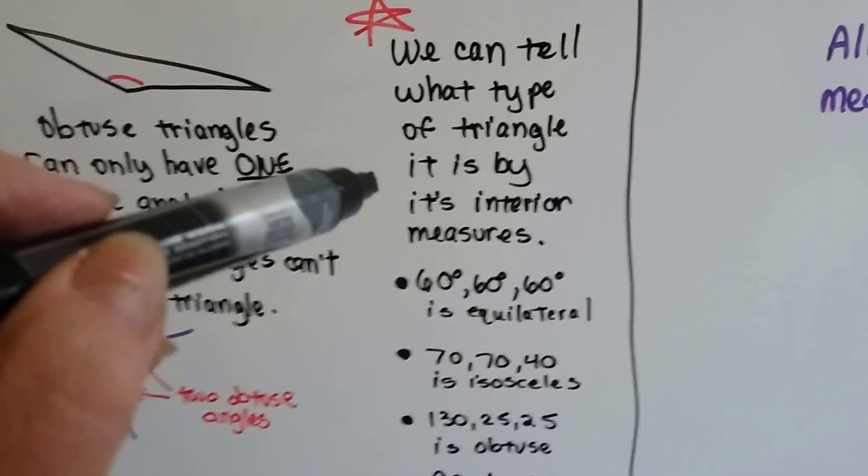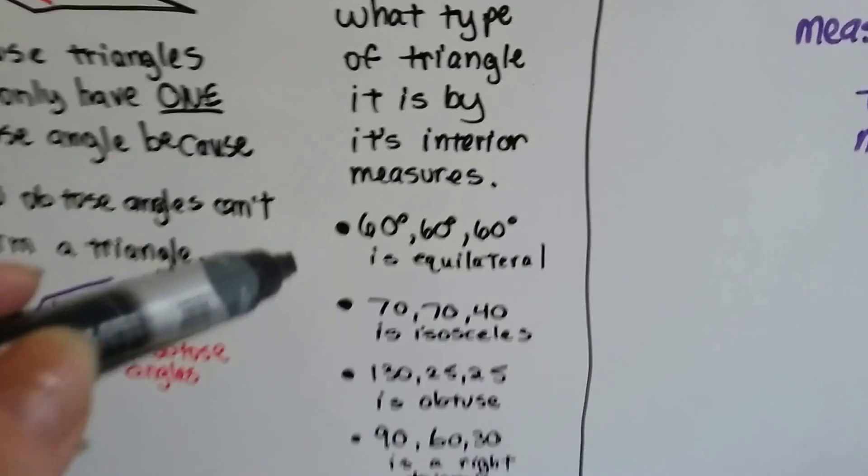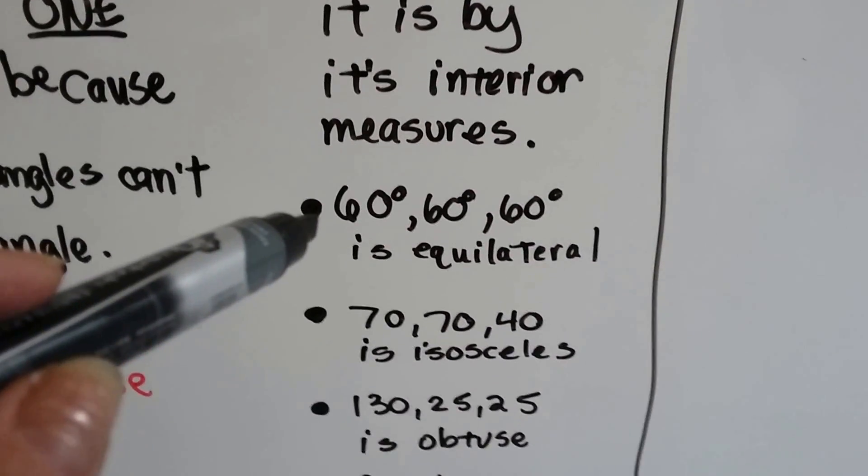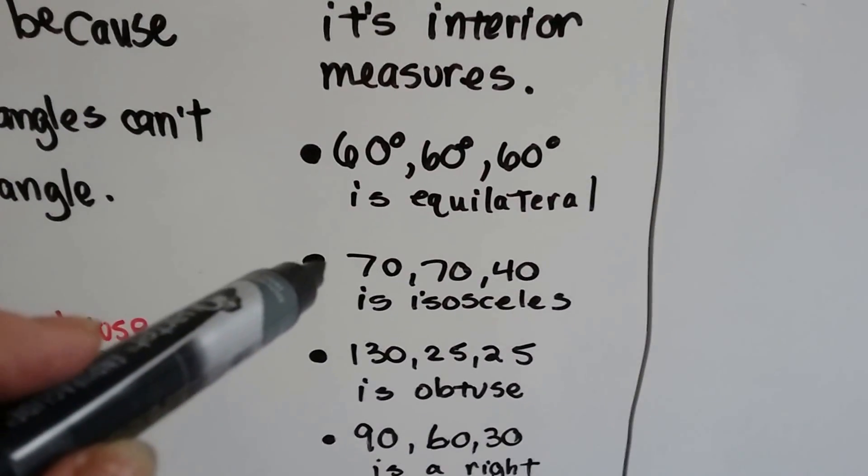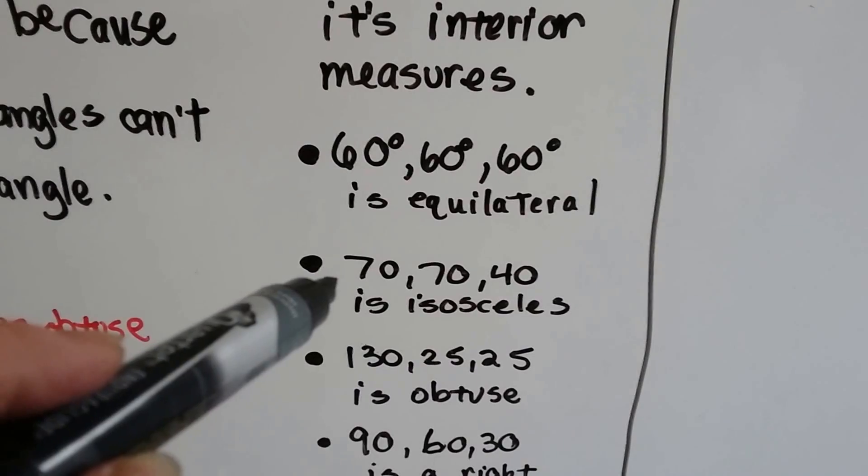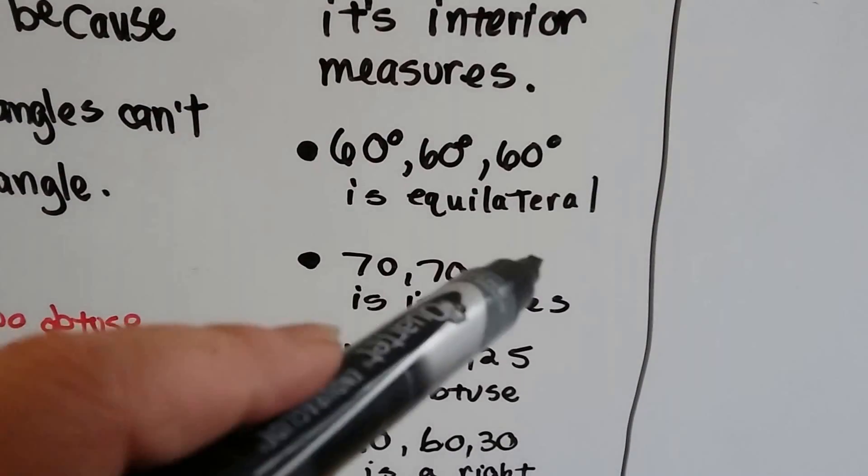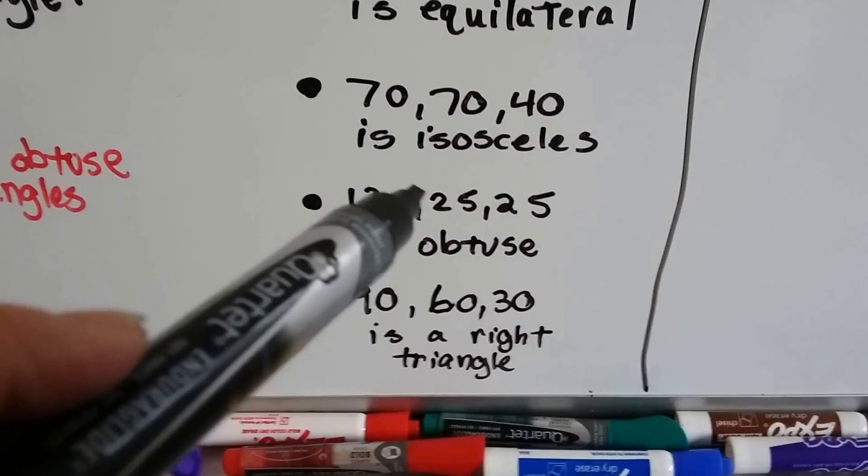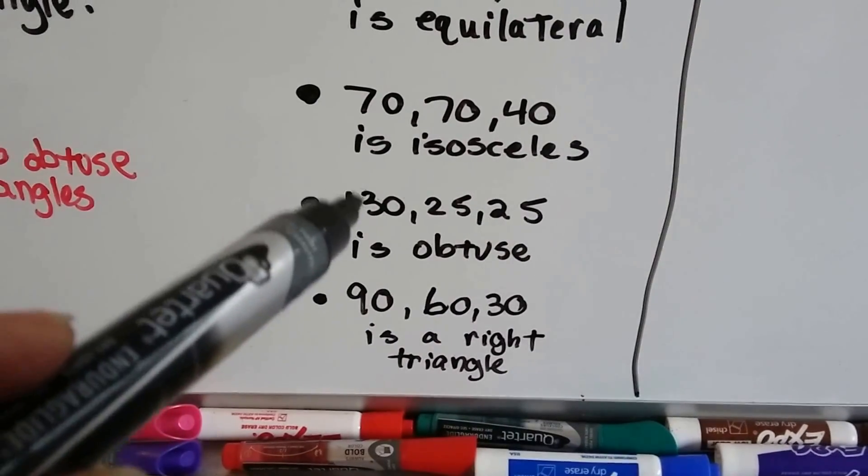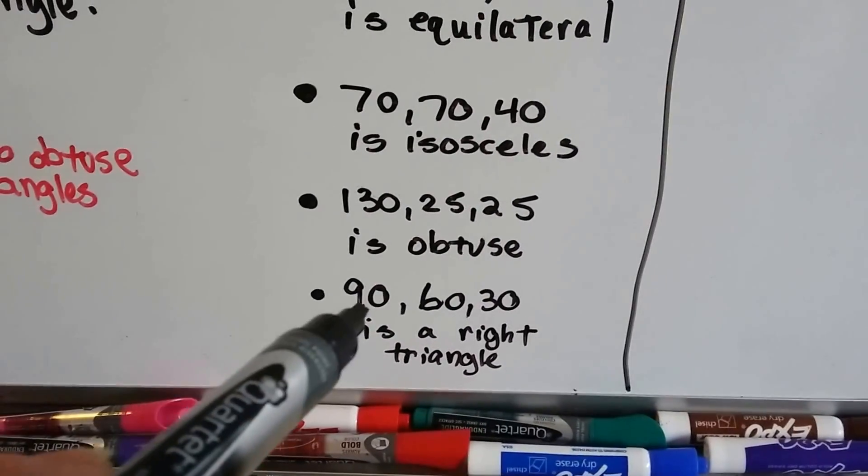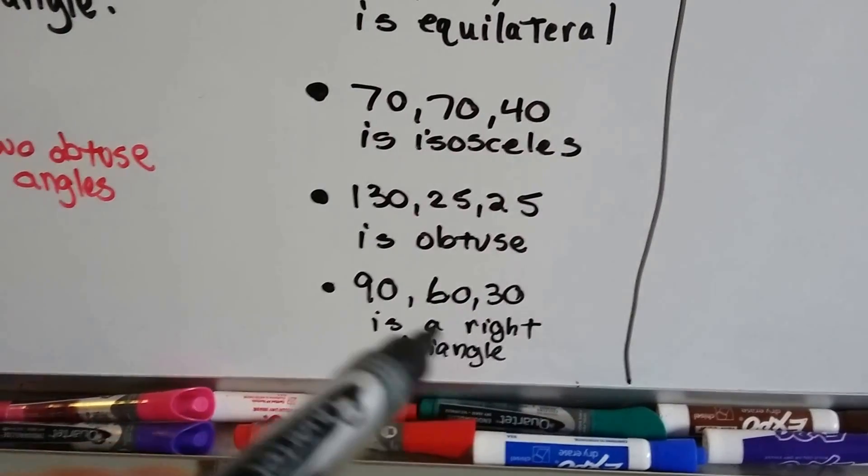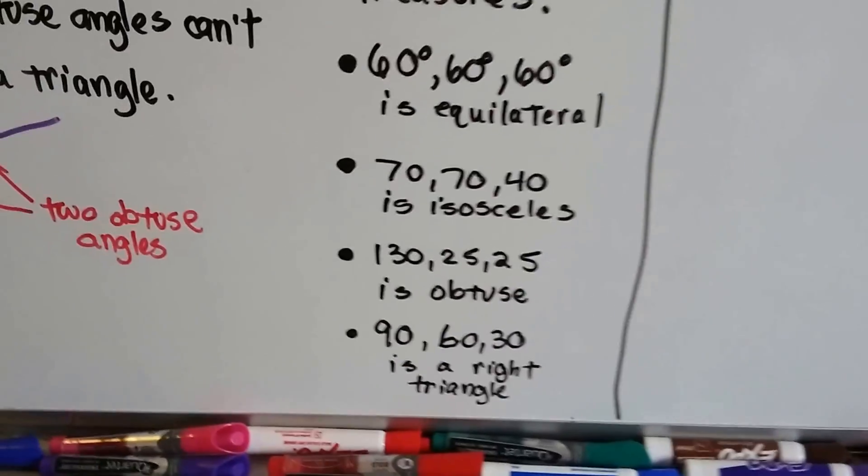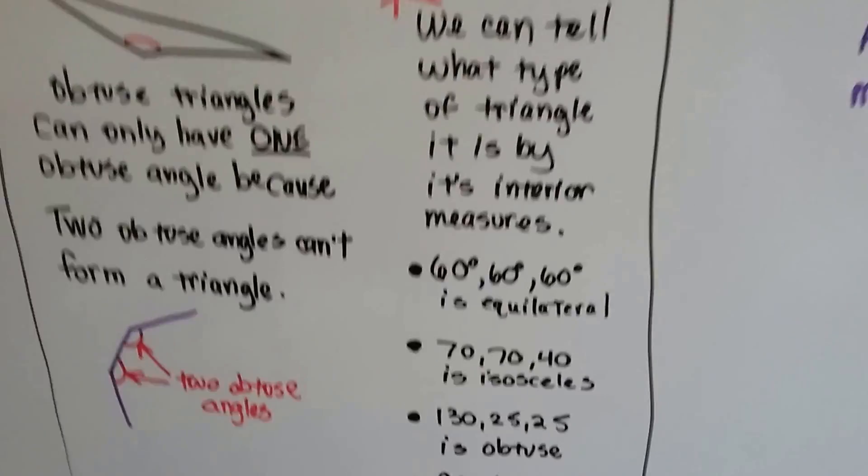We can tell what type of triangle it is by its interior measures. If it's 60, 60, and 60, we know it's equilateral, because they're all the same. If it's 70, 70, and 40, it's isosceles, because two angles are the same and then one smaller. If it's 130, and then a 25, and a 25, we know it's an obtuse angle, because that's bigger than 90 degrees. And if it's 90 degrees, 60, and 30, we know it's a right triangle, because there's a 90 degree angle in it. So just from the measures, we can tell what kind of triangle it is.